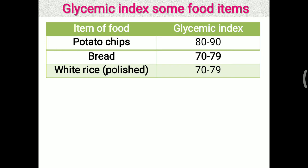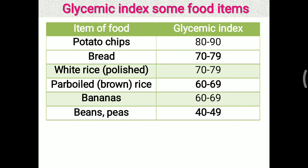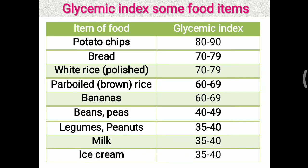For bread and white rice, the glycemic index is 70 to 79. For the lower range, brown rice and bananas have a moderate index. White beans and peas have a glycemic index of 40 to 49, which is just half of the 50 grams of glucose reference. For legumes, peanuts, milk, and ice cream — which have a glycemic index of 35 to 40 — these are advisable for diabetic patients because they do not cause a sudden rise in blood glucose.